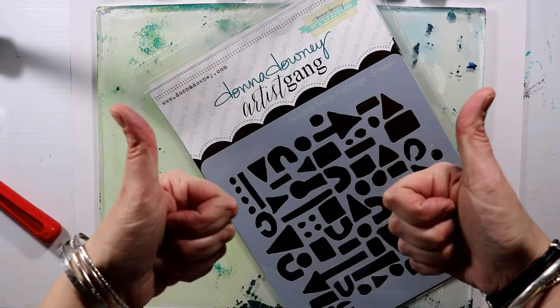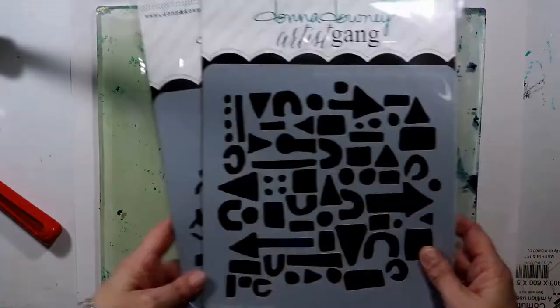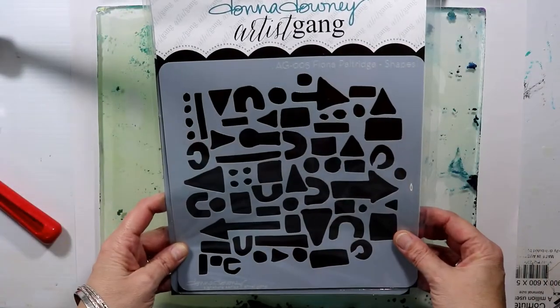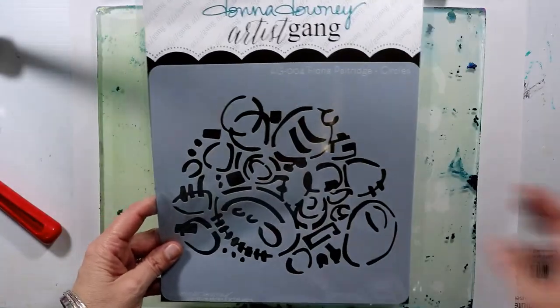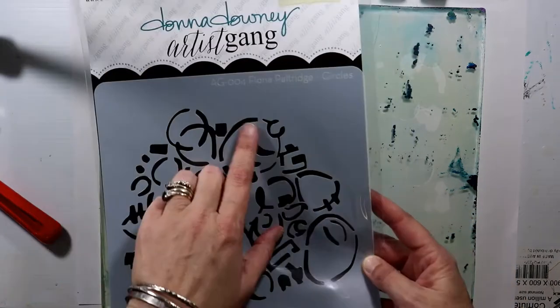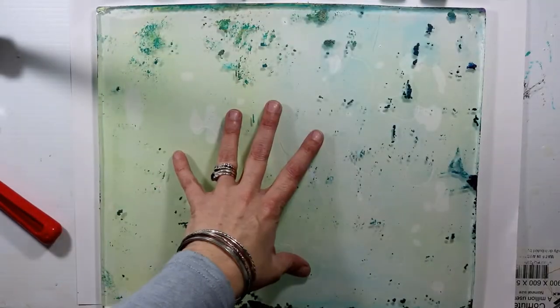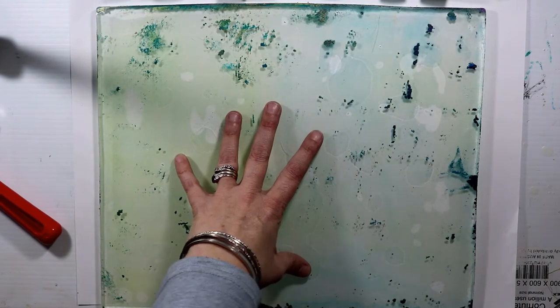Hello everybody, Fiona Paltridge here with you today. I'm going to show you what I've done with my latest stencils that I designed for Donna Downey's Artist Gang. I've got two stencils on the go here—circles and shapes—and I'll be using both of them today on my gel plate.